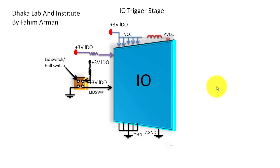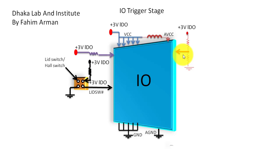The lid switch or halt switch is very important. This switch is powered by plus 3 volt LDO, and this switch creates a signal named lid switch hash, which enters into the IO chip. There is also another circuit called the thermal protection circuit, which is very important. This circuit is powered by plus 3 volt LDO and uses a voltage divider. This section is critical — if it is bad, IO triggering will not succeed.